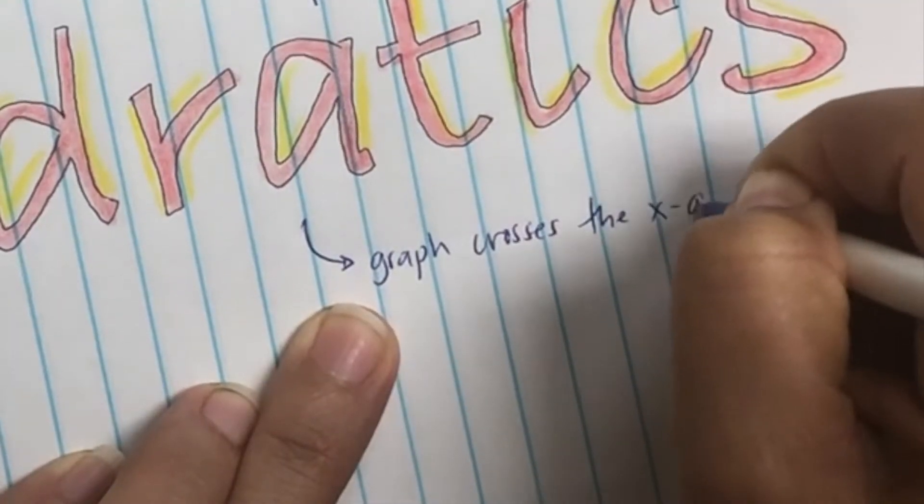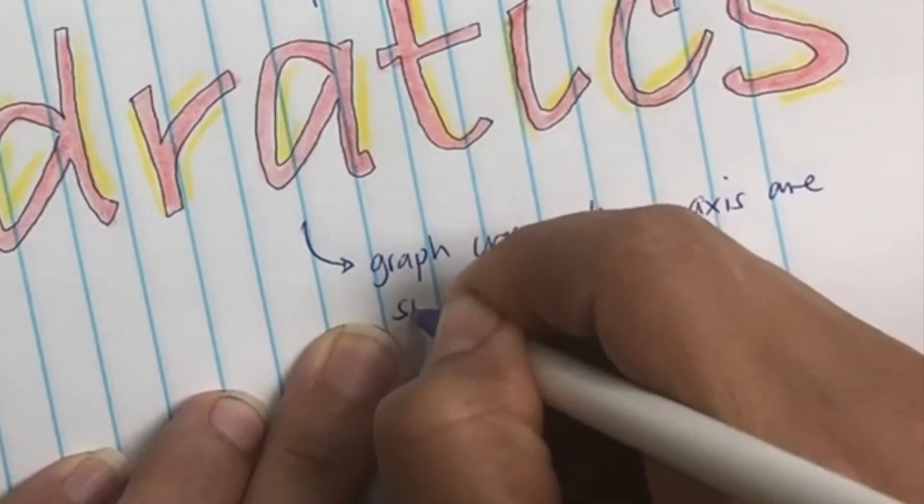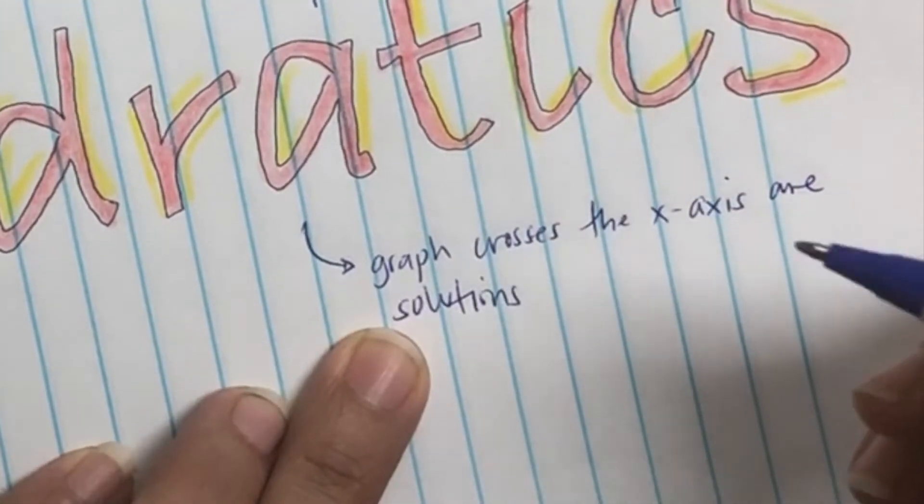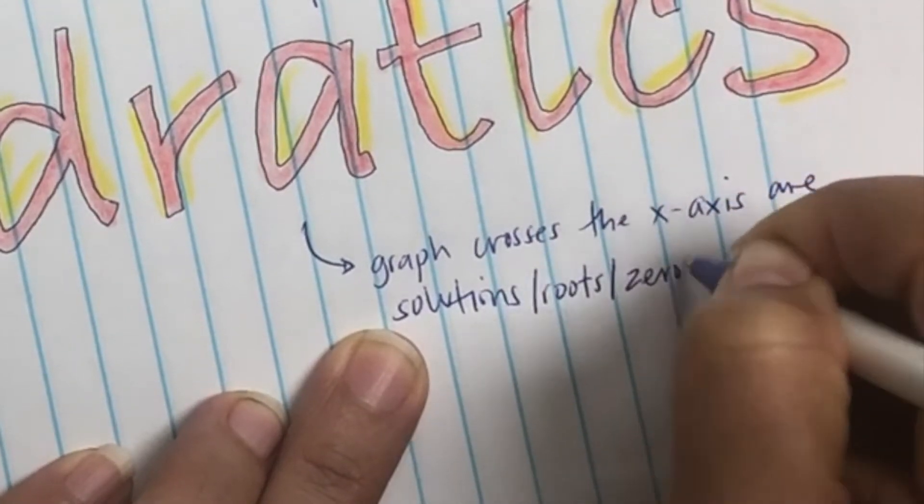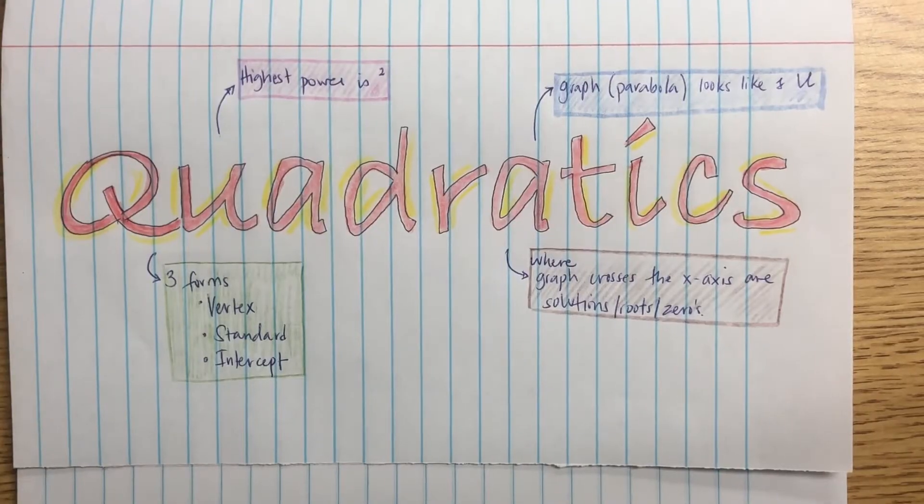Wherever the graph crosses the x-axis, those are the solutions or the roots or the zeros or the x-intercepts. The question will vary on how it asks - it may say the solutions, the roots or zeros, or the x-intercepts.